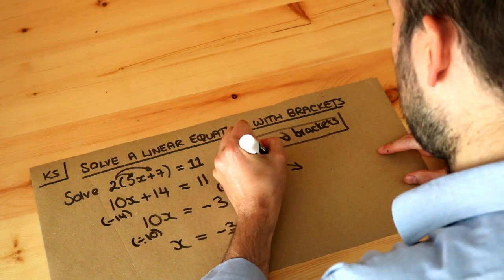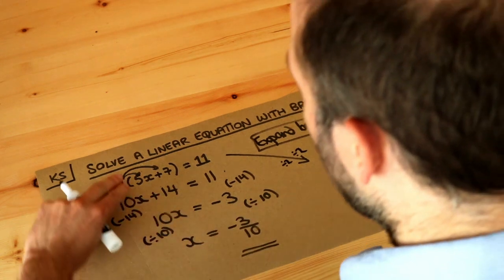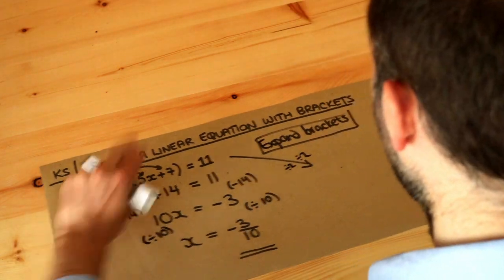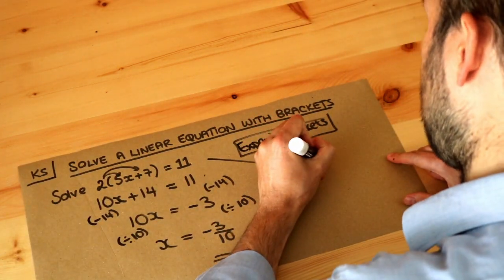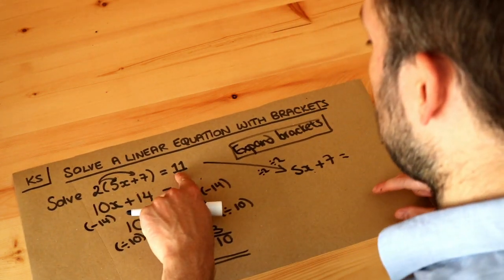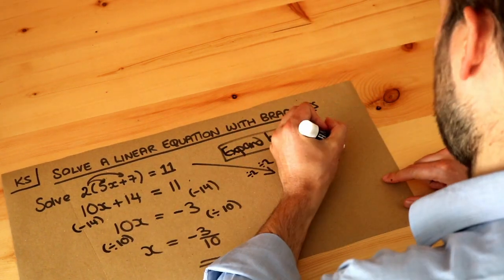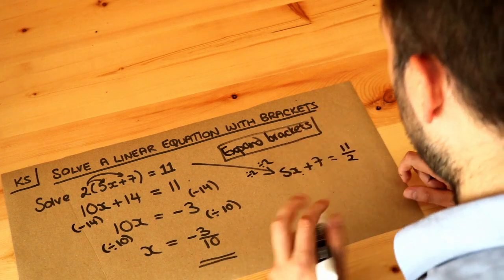We could divide both sides of the equation by 2. That would get rid of the times by 2, leaving 5x+7, and then we divide the right-hand side by 2. So 11 divided by 2, we could write as 11 over 2 or 5.5.